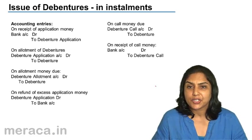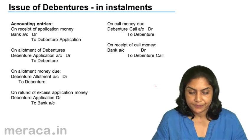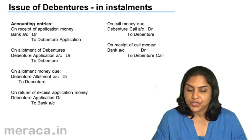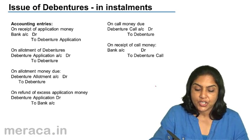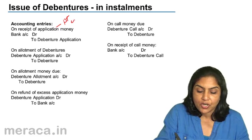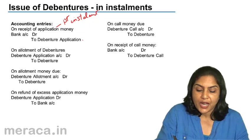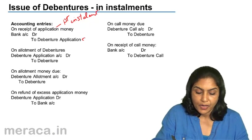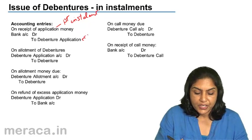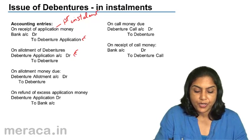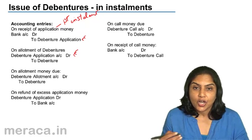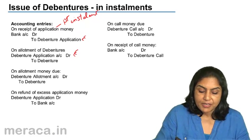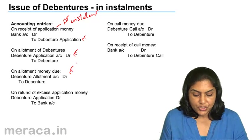Usually debentures are payable in one or two installments. So, just a revision of the accounting entries: in case of receipt of application money, or what is called the first installment, the entry would be bank account debit to debenture application. Then on allotment of debentures, it would be debenture application account debit to debentures. For the second installment that becomes due, it is debenture allotment account debit to debentures.